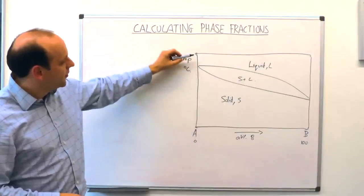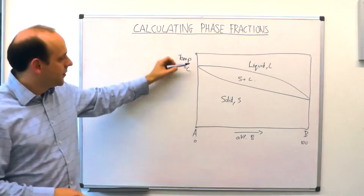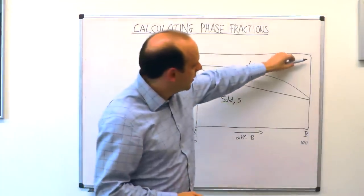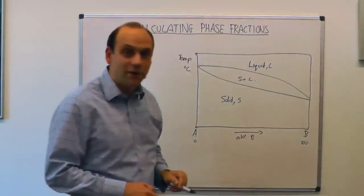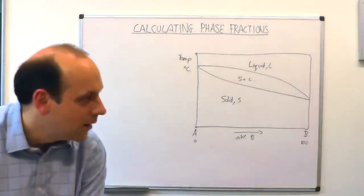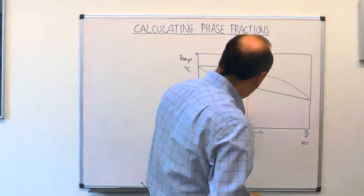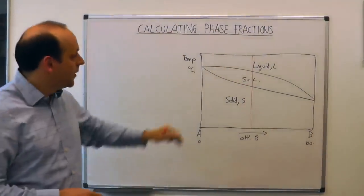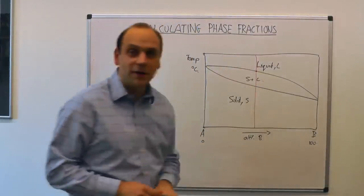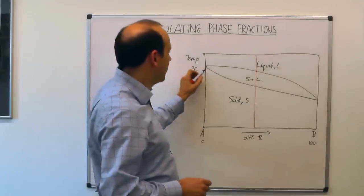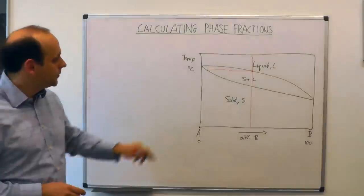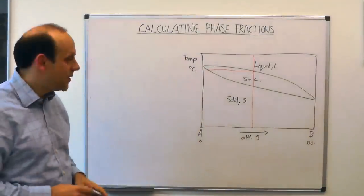Pure A would solidify directly into solid with an arrest as it gave up the latent heat of transformation. Pure B would go from liquid to solid at its melting temperature, again with an arrest associated with the latent heat. If we took an alloy with some intermediate composition, we'd start off in the liquid and then begin to form some solid when we reached the liquidus line. We could read across that temperature and find the composition at which solid started to form — say five or ten percent.